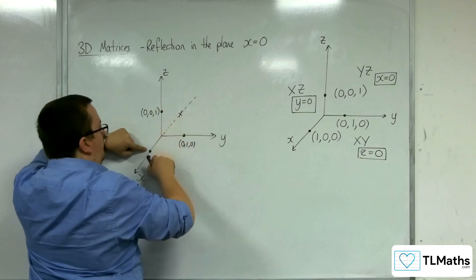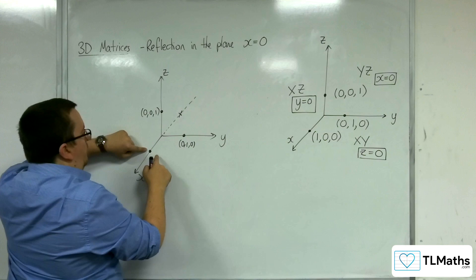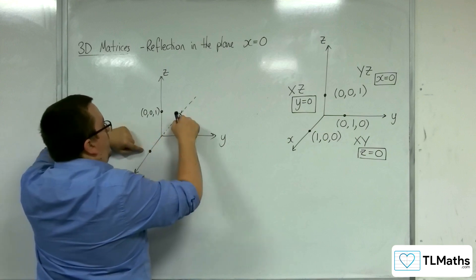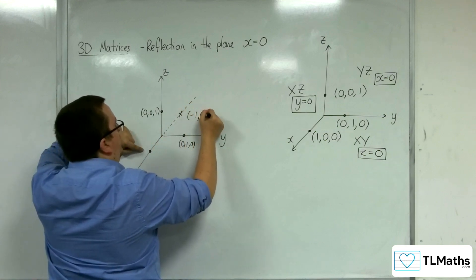But this point reflects back through. And so it has gone from (1,0,0) to actually (-1,0,0).